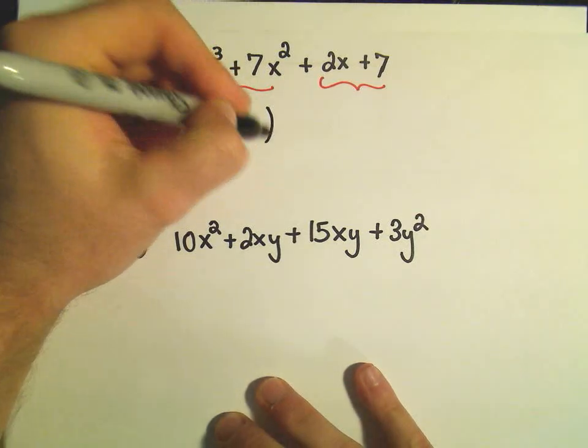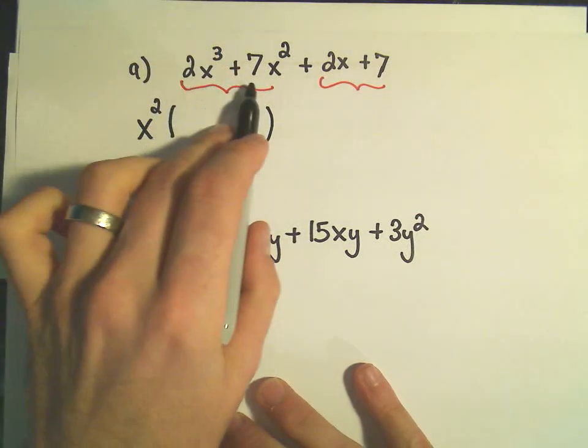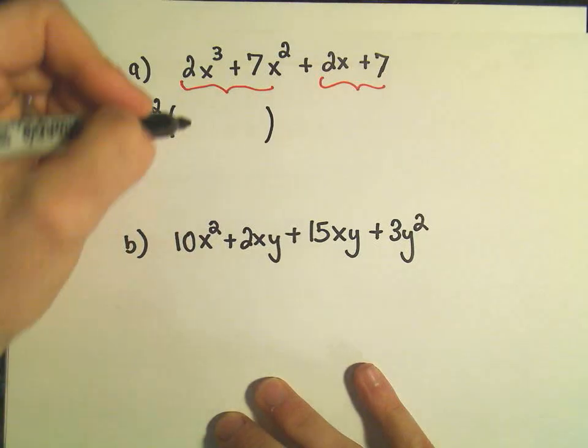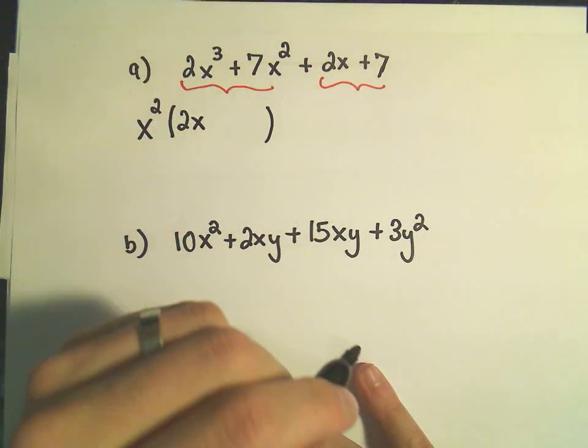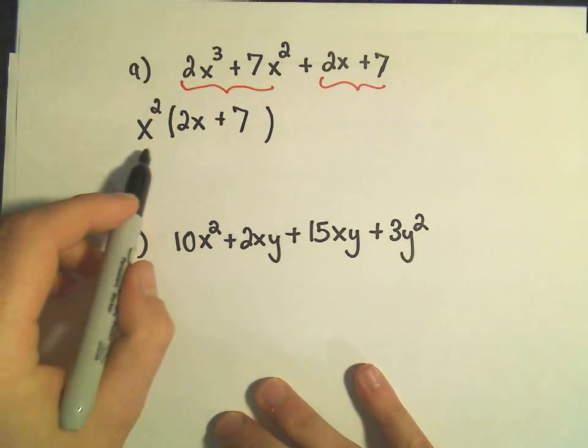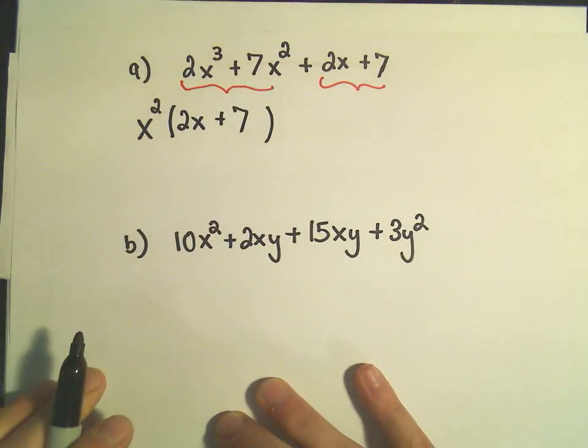And then I think, well, what would I need in parentheses to get the 2x cubed plus 7x squared? Well, 2x times x squared would give me 2x cubed. And then we would need a positive 7 to get our 7x squared.